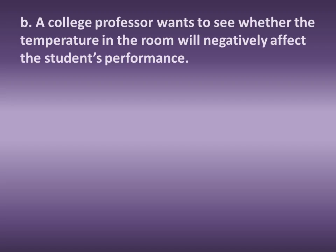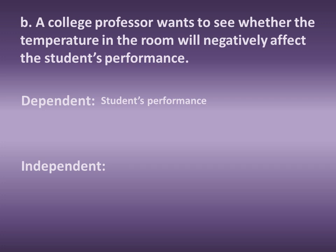Next example: a college professor wants to see whether the temperature of the room will negatively affect the students' performance. You have two variables: students' performance and temperature in the room. The professor is interested in the performance of the students, so that is the dependent variable. He would be manipulating the temperature — you really can't manipulate the students' performance. The independent variable is temperature; the professor would set different temperatures in the room and see how the students respond.